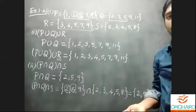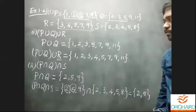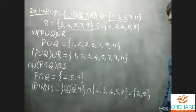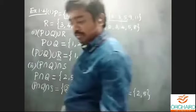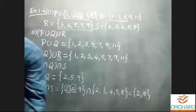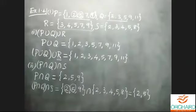Complete the first two subdivisions and next we'll move on to the third subdivision. The third subdivision is also an intersection between three sets: q intersection s intersection r.